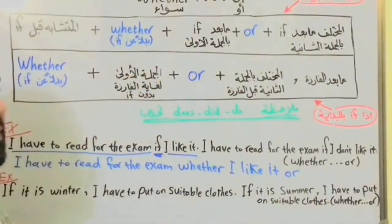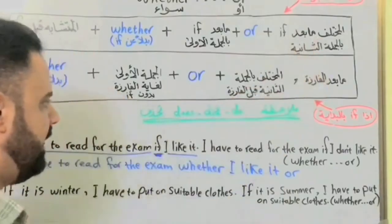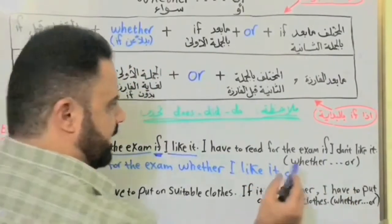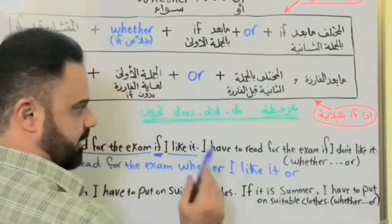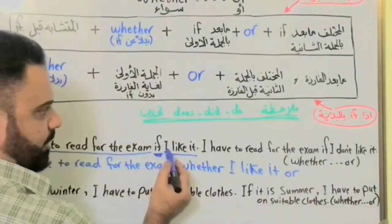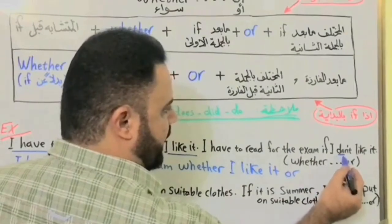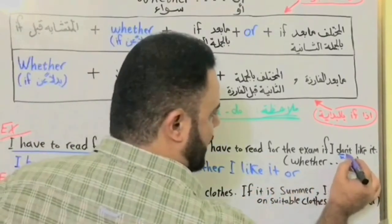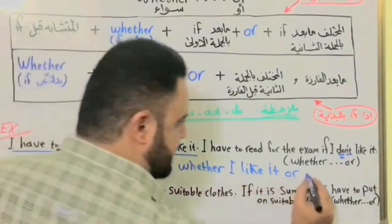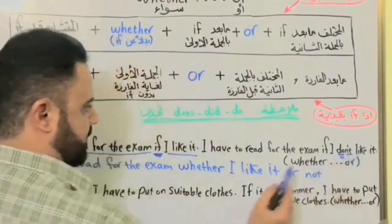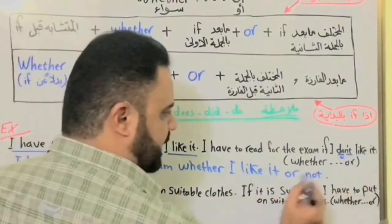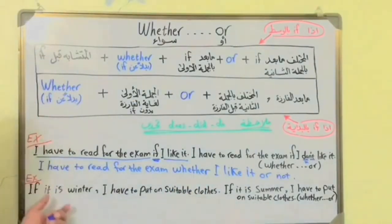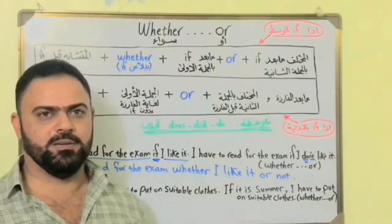Now I'll show you an overview. The difference between the two sentences is 'like it' versus 'don't like it.' So the different element is 'not.' The combined sentence: I have to read for the exam whether I like it or not.